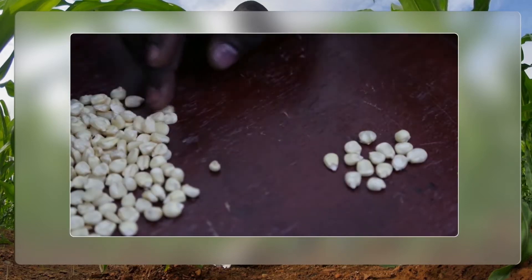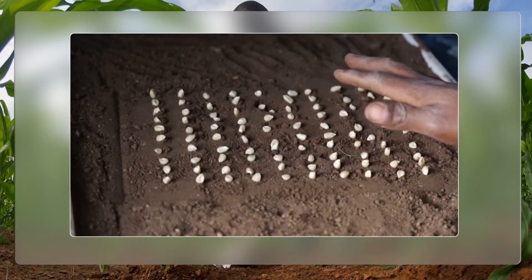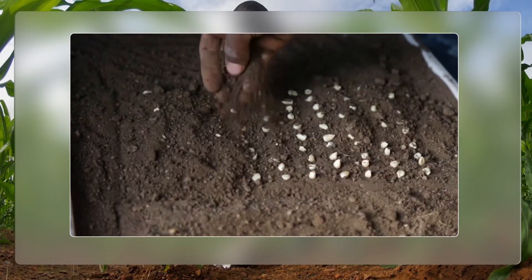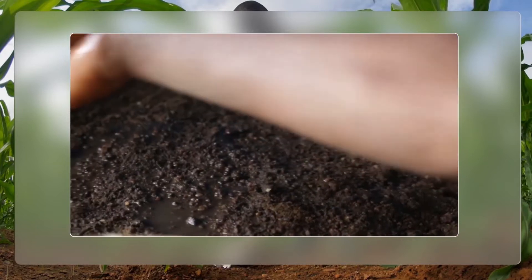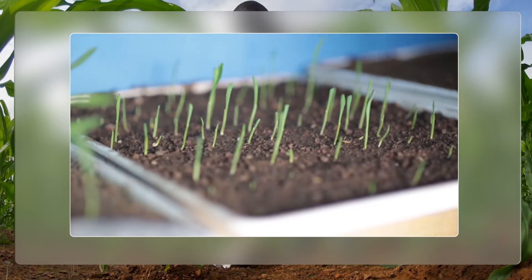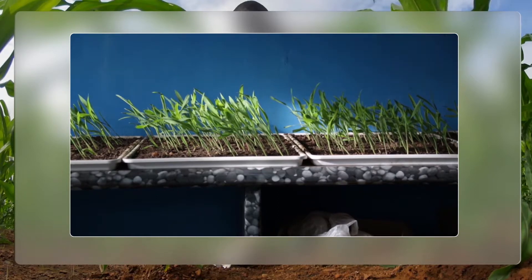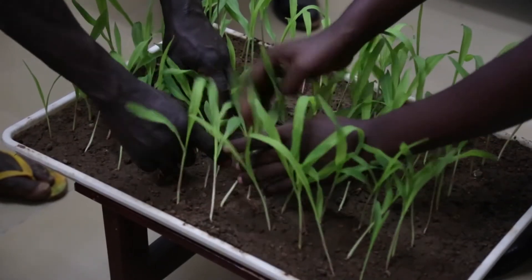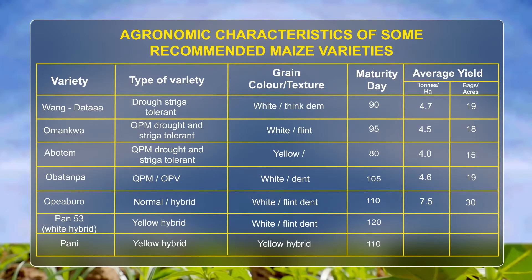Count 100 seeds and plant them in shallow trenches about 5 cm deep and 1 to 2 meters long. Cover with 3 cm of soil. Water well for 1 week but do not over-wet the soil. Count the number of seedlings that emerge at the end of the week. If above 90 seeds germinate, go ahead and plant your seeds in your field. There are different varieties available for farmers.